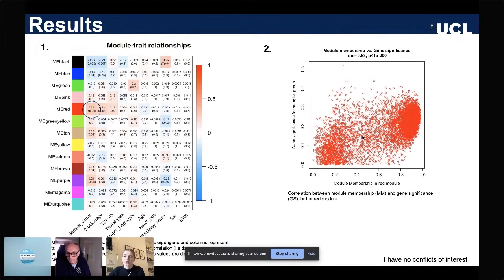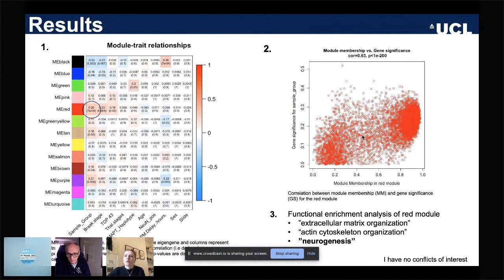Finally, we carried out a functional enrichment analysis of genes mapping to probes with higher module membership in this red module. We found enrichment of gene ontology terms such as extracellular matrix organization and actin cytoskeleton organization, as well as relevant processes for the brain such as neurogenesis and neuron differentiation, which further supports the role for DNA methylation alterations in PSP. Thank you very much.